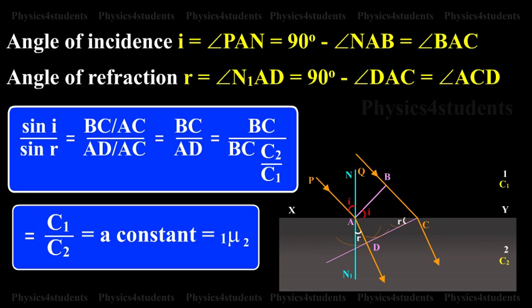Sin i by sin r is equal to BC by AC divided by AD by AC, that is equal to BC by AD is equal to BC by BC into C2 by C1 is equal to C1 by C2, is equal to a constant is equal to 1 mu 2.